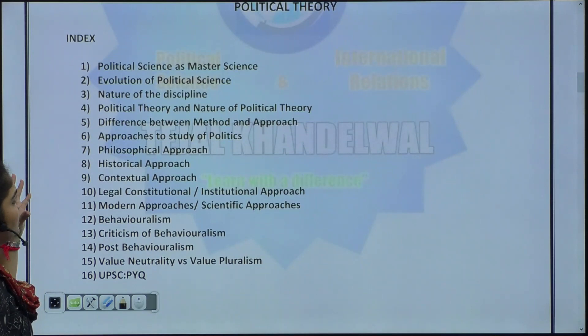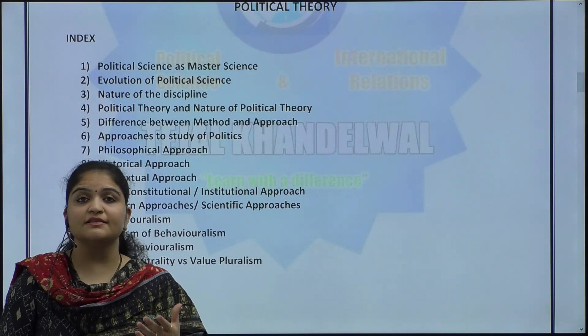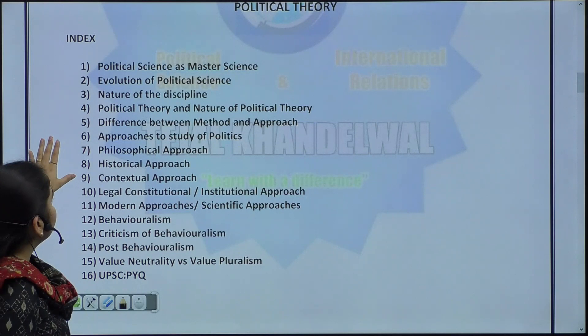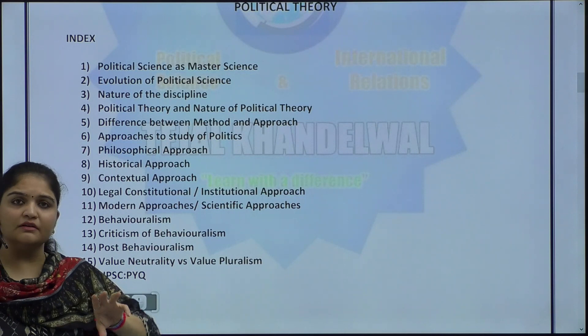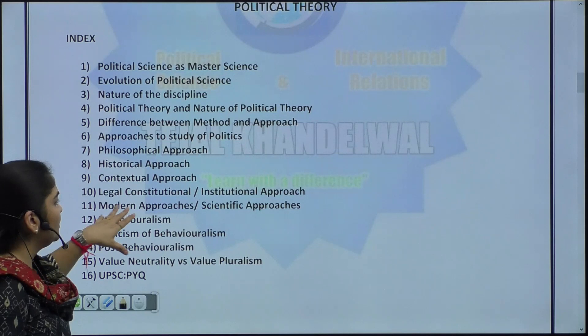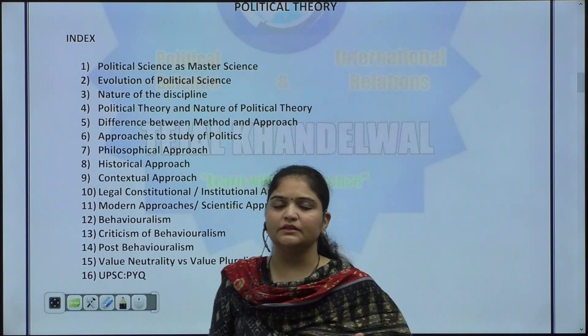First, the context being the discipline of political science — how it is a science, how it is an art, to what extent we should make it a science and not. Then the evolution of the discipline and how political theory evolved with it. Then the nature of the discipline, what is political theory, difference between a method and an approach, then approaches to study politics: philosophical, historical, contextual, legal, constitutional or institutional, modern approaches, scientific, behavioralism, issues of behavioralism, post-behavioralism, and value neutrality and value pluralism of Isaiah Berlin. These concepts have to be studied in detail.